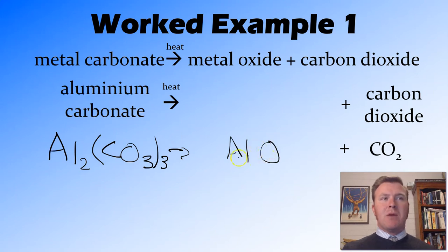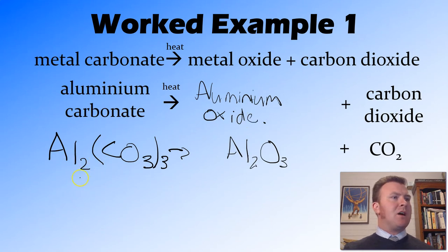So now we need to balance this ion, and aluminum's 3+, oxygen's 2-, so we're going to have to do another swap and drop there. Al2O3, which is aluminum oxide, and now we just need to see whether this equation is balanced.